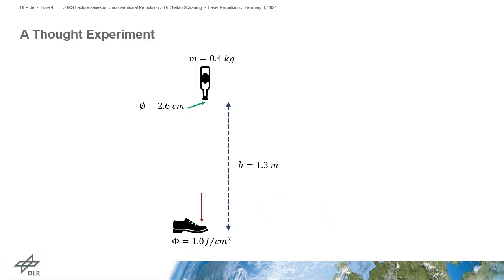So, let's now summarize what would happen if I really let this bottle drop down on my foot. Taking some numbers, the mass of the bottle is 400 grams, the impact area is 2.6 cm in diameter, and we have an altitude for dropping the bottle of 1.3 m, which converges then from potential energy into kinetic energy. This finally yields an energy density on impact, dropping on my foot, of 1 J per square cm.